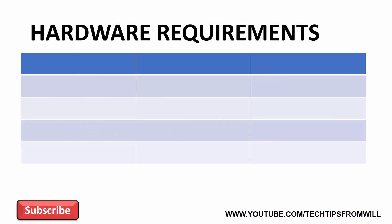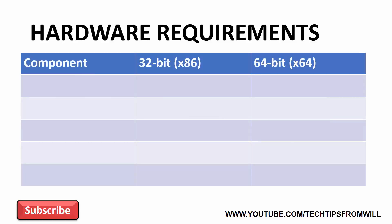Windows 10 comes in two different architectures: the 32-bit architecture also known as x86, and the 64-bit architecture also known as x64. The 32-bit architecture is the older of the two and has been around for a while. The 64-bit architecture is the newer standard and in recent years has really started to take off. In a later video I will look at 32-bit and 64-bit architectures in more detail, so don't worry if you don't understand the differences just yet. In this video, all you need to know is that Windows 10 is available in both architecture types and that the minimum hardware requirements will vary depending on your chosen architecture.